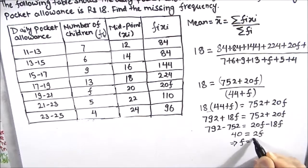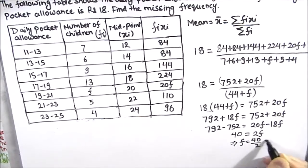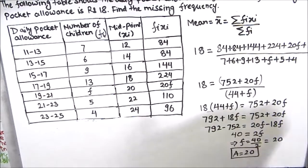So this gives us f equals 40 divided by 2, which equals 20. So our final answer is 20. The missing frequency is 20. So this is how by using the mean formula we can find the missing frequency when the mean is given.